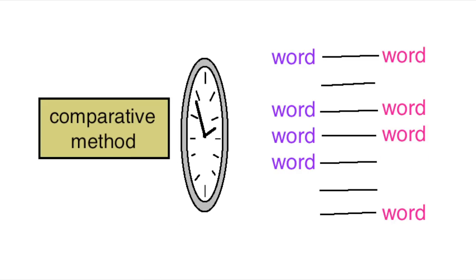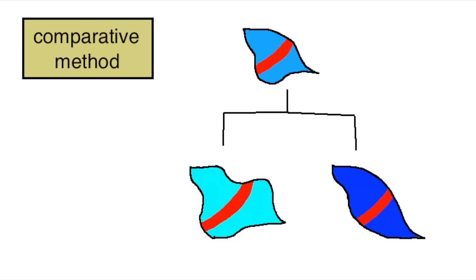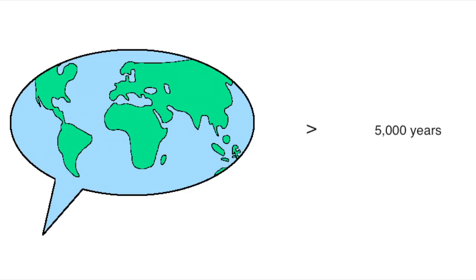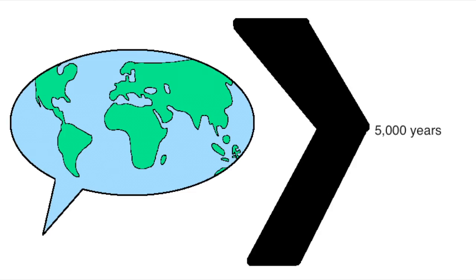And given enough time, more and more words will start to mean different things than they used to. Because of all this, the comparative method can only really show us if languages are related if they diverged from each other fewer than, like, 5,000 years ago or so, and human language is way, way older than that.